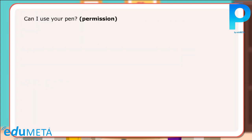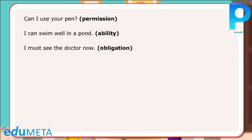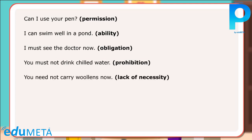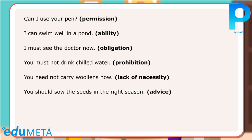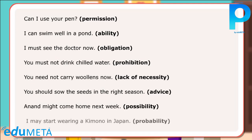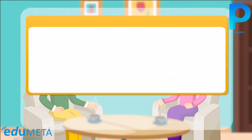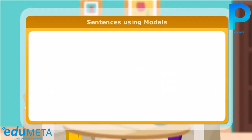Can I use your pen? — Permission. I can swim well in a pond — Ability. I must see the doctor now — Obligation. You must not drink chilled water — Prohibition. You need not carry woolens now — Lack of necessity. You should sow the seeds in the right season — Advice. Anand might come home next week — Possibility. I may start wearing kimono in Japan — Probability. Here are a few more sentences using modals.